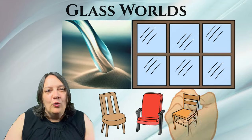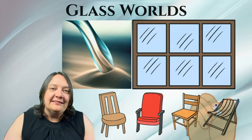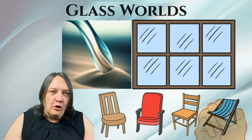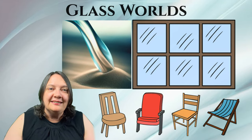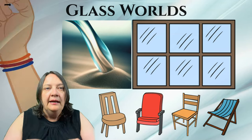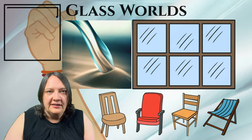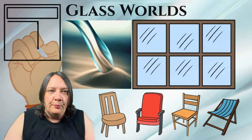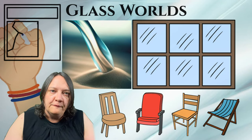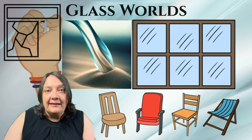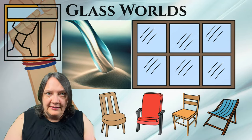This amorphous structure gives glass its transparency, as the lack of long-range order in the atomic arrangement prevents the scattering of light. It also contributes to the brittleness of glass, as the absence of a repeating lattice structure means there are no preferred planes for the atoms to move along and accommodate stress.